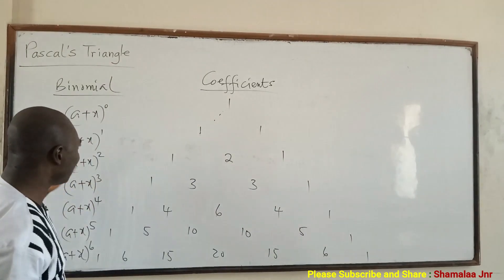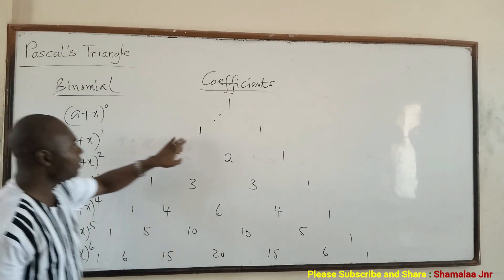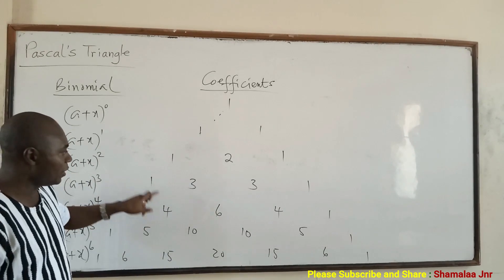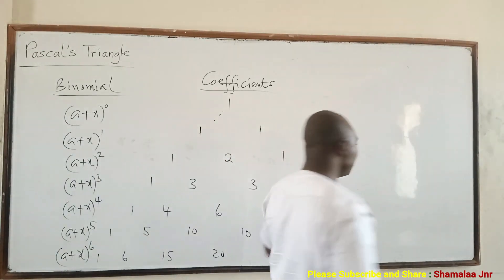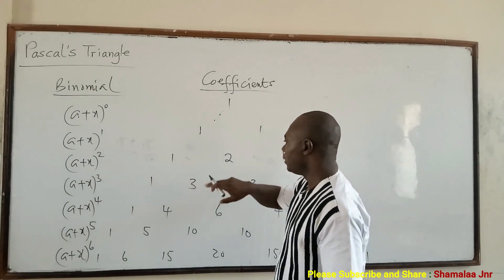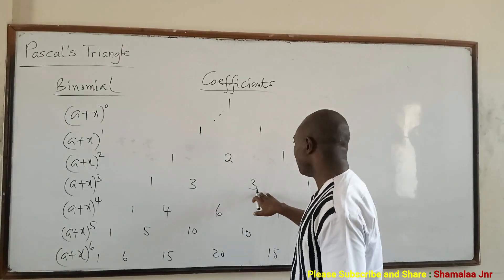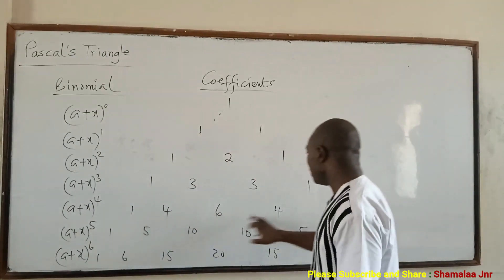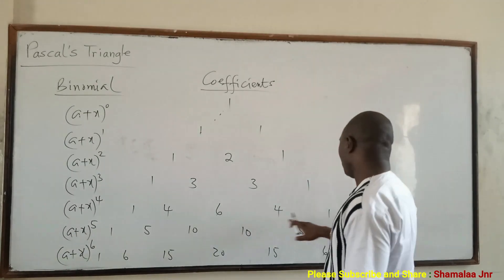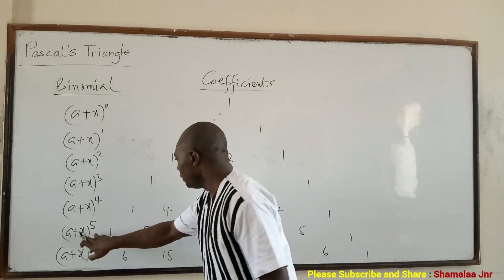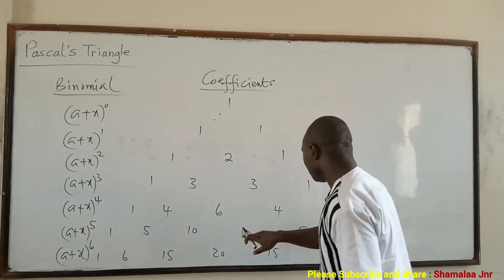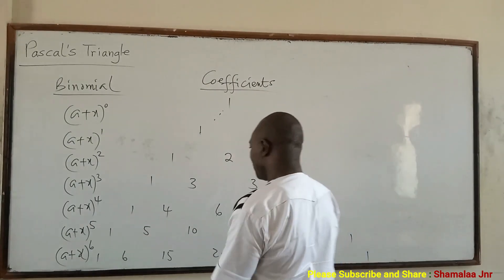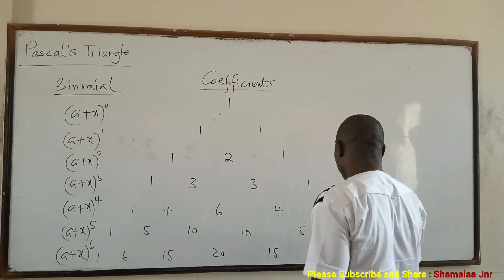When the question is given to you and it is raised to the power 1, these are the coefficients. If raised to the power 2, these are the coefficients. If the power is 3, the coefficients are 1, 3, 3, 1. If raised to the power 4, the coefficients are 1, 4, 6, 4, 1. If raised to the power 5: 1, 5, 10, 10, 5, 1. And for power 6: 1, 6, 15, 20, 15, 6, 1.